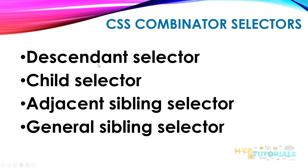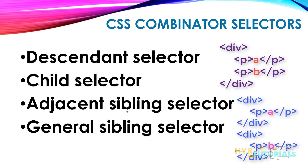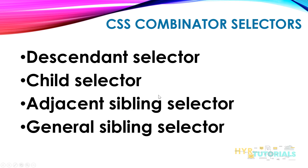A descendant means children plus grandchildren — when you use the descendant selector it will fetch both the child and the grandchild. The child selector fetches only the direct child. Sibling means elements that share the same parent. For example, if elements A and B have the same parent, they are siblings. But if A is inside one div and B is inside a different div, they cannot be called siblings because they share different parents.